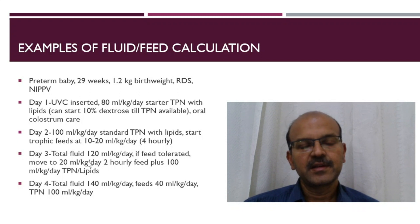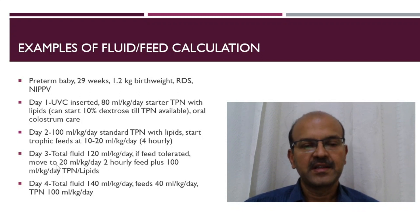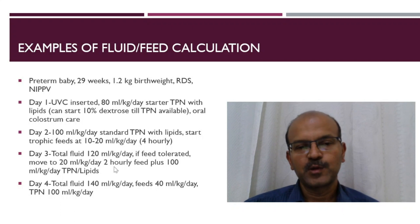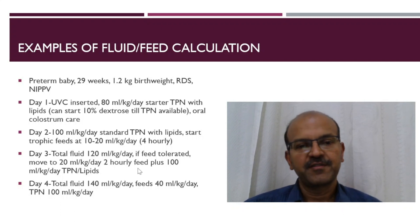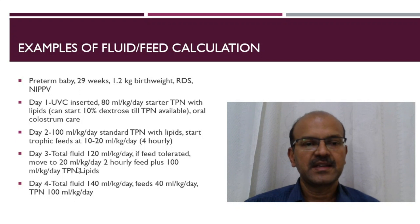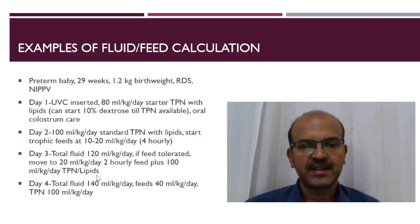By day 3, the baby was on 120 ml total and the feeds went to 20 ml per kilo 2-hourly. That's the same volume but divided over 2-hourly feeds, plus 100 ml per kilo per day of TPN and lipids.